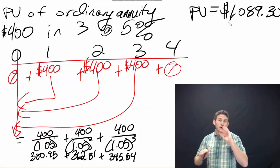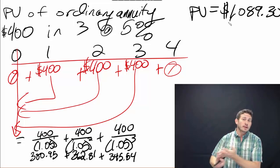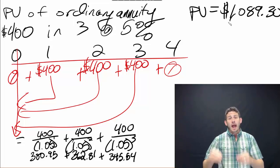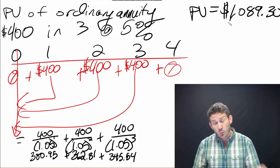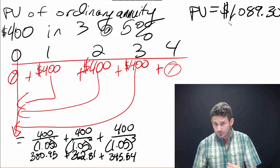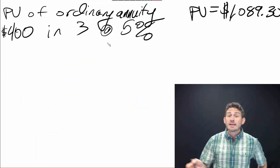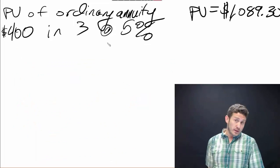We just took essentially three lump sum payments and we are adding them up, and that's going to come up with a present value of $1,089.30. So there is a simpler way of doing this.